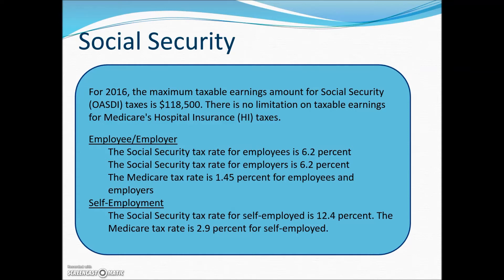There is no earnings limit for earnings subject to Medicare hospital insurance taxes. The Social Security tax rate for an employee is 6.2%, which is subtracted from their gross pay, and the employer contributes an equal matching amount. The Medicare tax rate is 1.45% with no limit on earnings — both employee and employer share that rate equally. Self-employed people pay double the amount, since they're paying for both employee and employer portions combined.